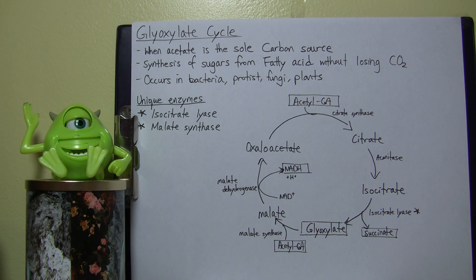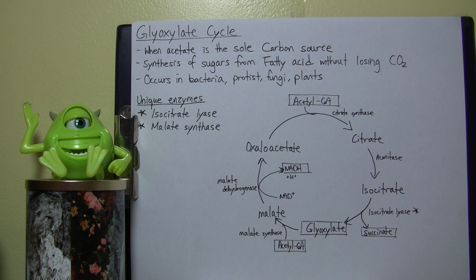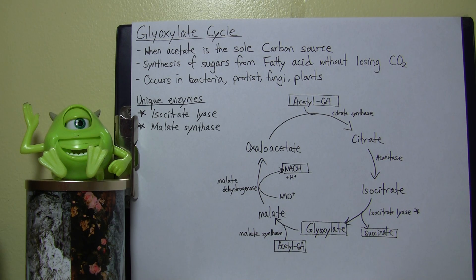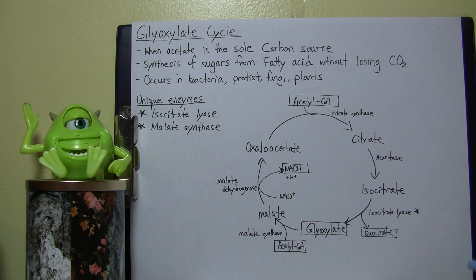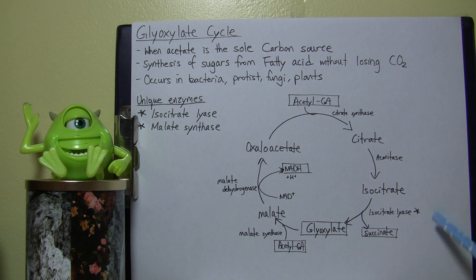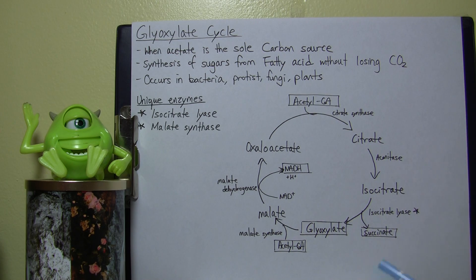In the original tricarboxylic acid cycle you would produce ATP, but here instead of losing carbon dioxide, ATP production has been sacrificed. However, not losing carbon dioxide is much, much more important for these microorganisms. So this is the modified tricarboxylic acid cycle.